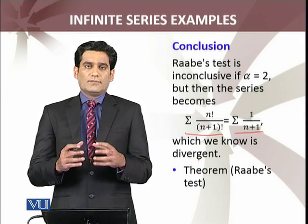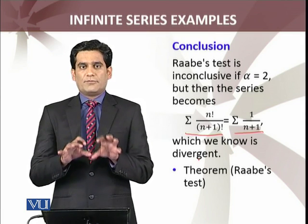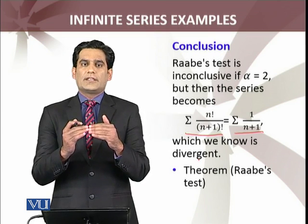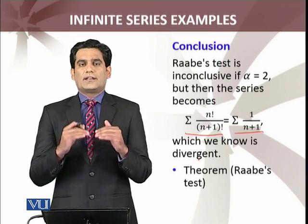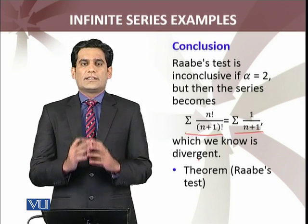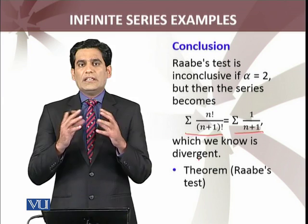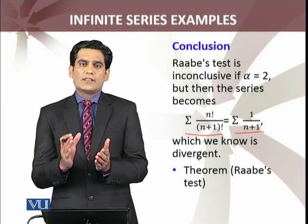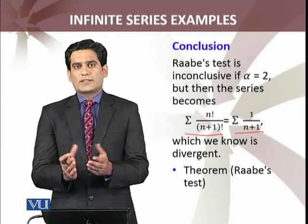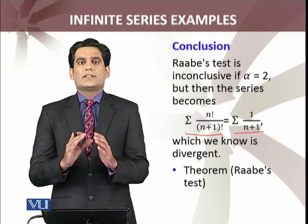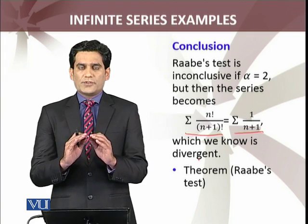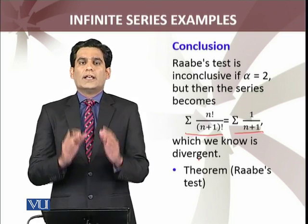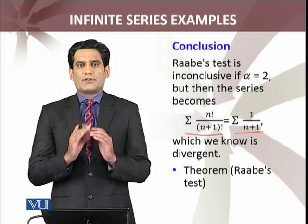So even the theorem cannot be applied whenever α equals 2, but for α equals 2, our series simplified, and we have seen that for α equals 2, the series is divergent. When the test is inconclusive, the series can go both ways—it can converge or diverge. In this example, when the test was inconclusive, we were fortunate enough that simplification was possible, and we have seen that the series is divergent.